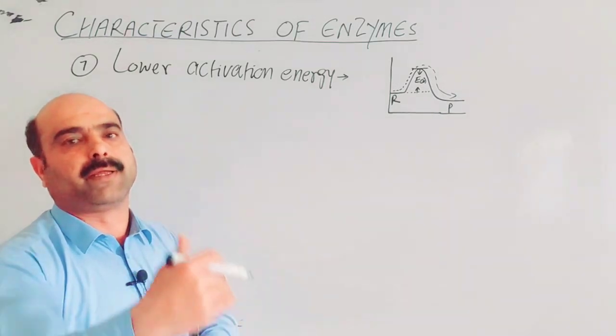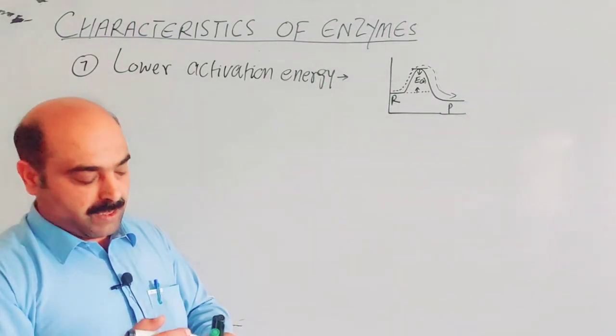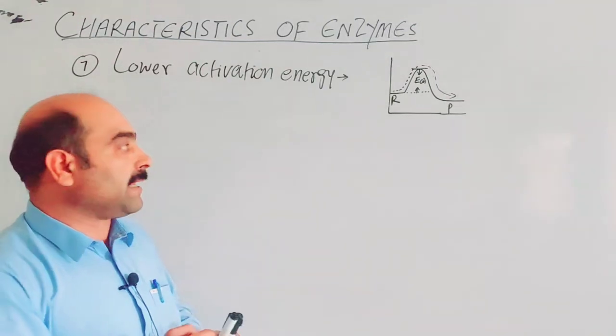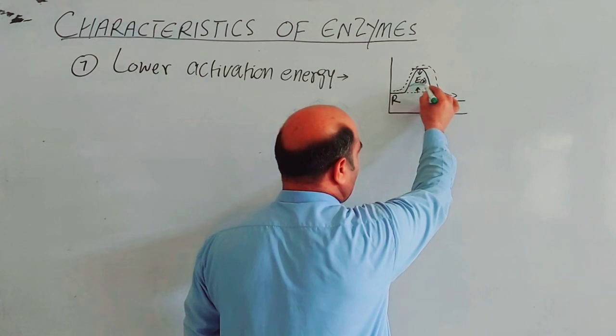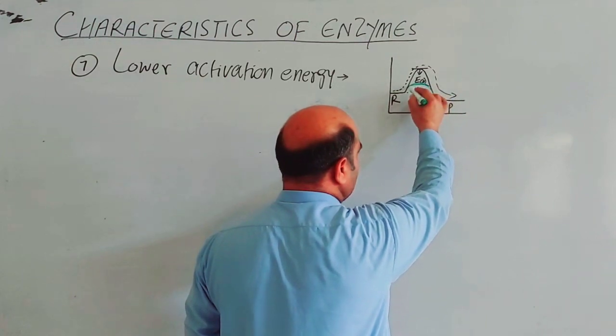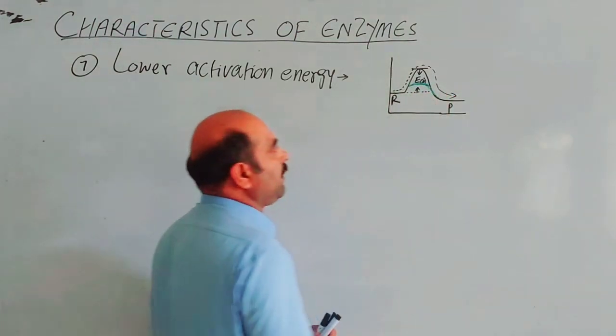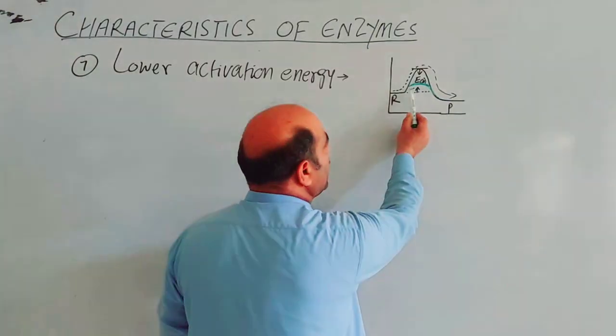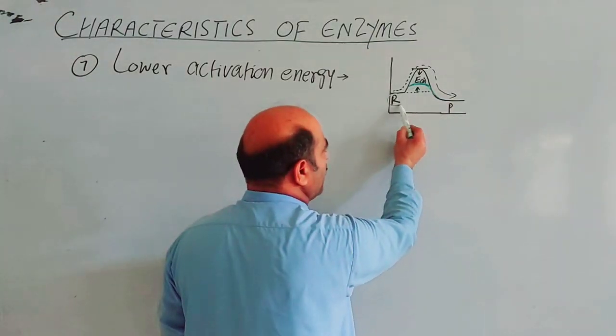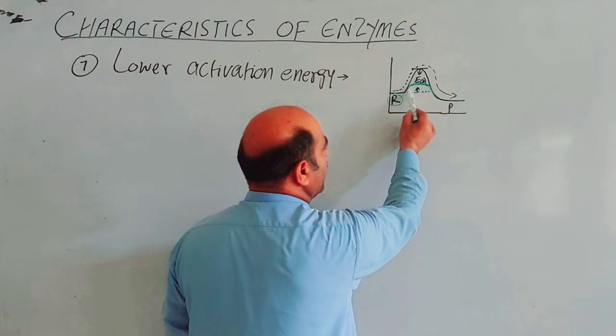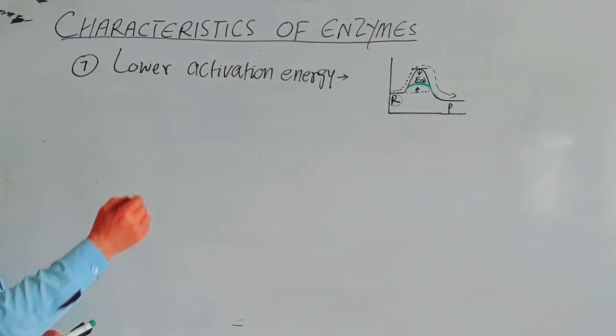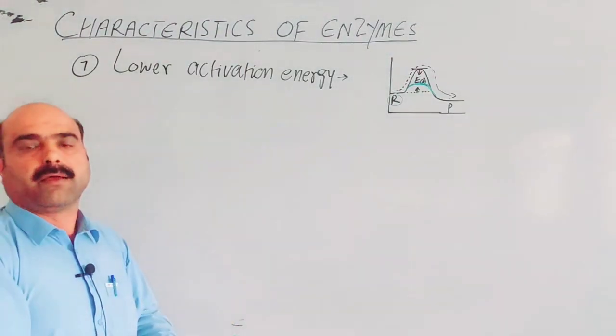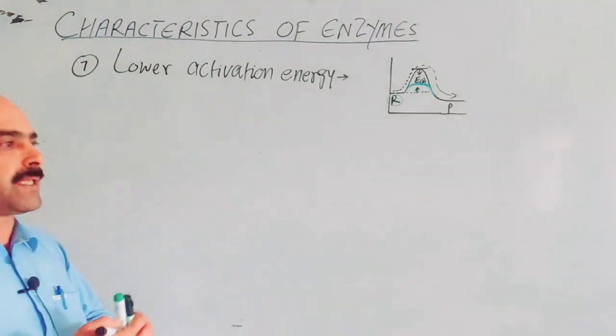In uncatalyzed reactions without enzymes, activation energy is high. But enzymes provide a shortcut, alter and change the path of the chemical reaction. They lower the activation energy required for reactant molecules to cross the hindrance and convert. Actually, enzymes lower the activation energy of reactants so molecules need less energy to convert to products.